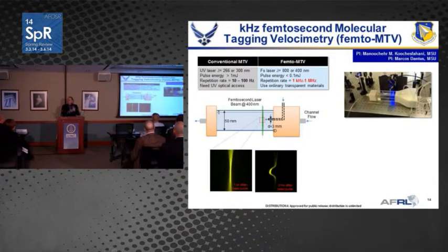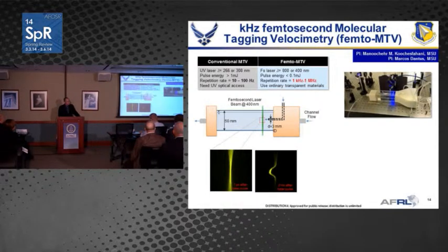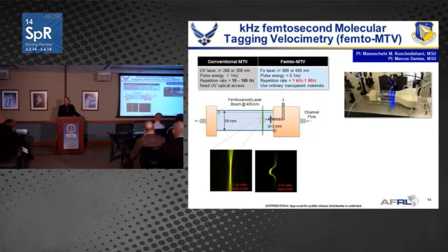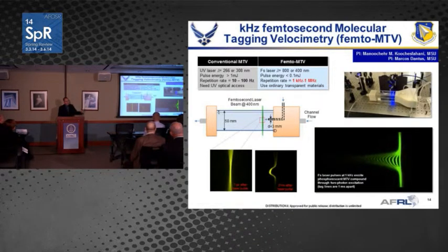This allows you to measure the velocity field of that flow. Conventionally, people use single-photon transitions requiring UV lasers with large energy per pulse, which limits them to low rep rates of 10 or maybe 100 hertz. You also have to worry about UV optics. The group is leveraging multi-photon excitation in the visible at very low pulse energies, allowing them to increase the rep rate to kilohertz to megahertz — about one to four orders of magnitude increase — and essentially look at MTV-type movies in real time.